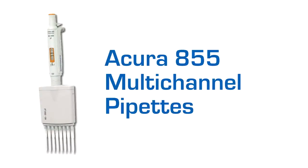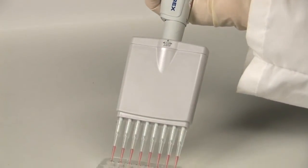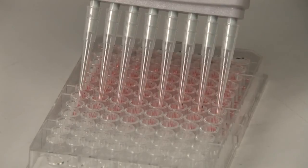The Acura Manual 855 multi-channel models come in both 8- and 12-channel models to enable high-throughput pipetting with microplates.